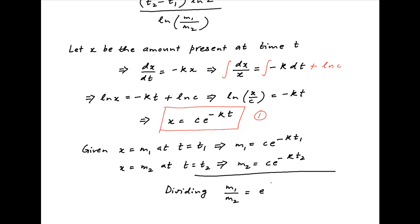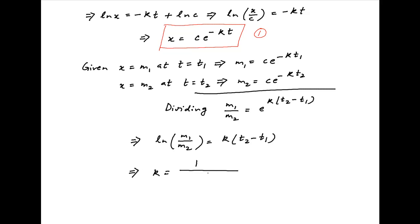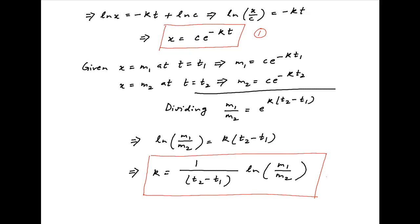Dividing the two results above, we get m1/m2 is equal to e raised to the power k times (t2 minus t1). Taking the log of both sides, we get ln(m1/m2) is equal to k times (t2 minus t1). Therefore the value of k is equal to 1/(t2 minus t1) times ln(m1/m2). Let's call this Result 2.